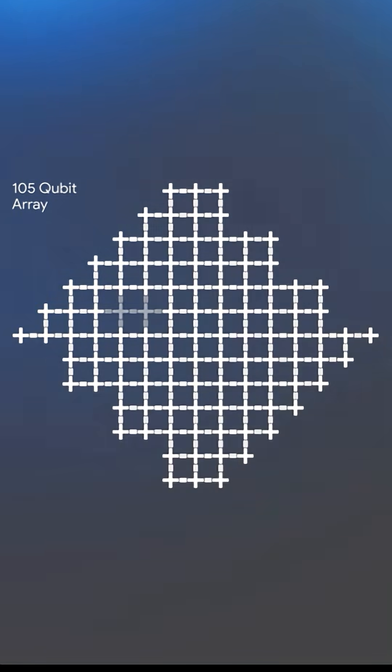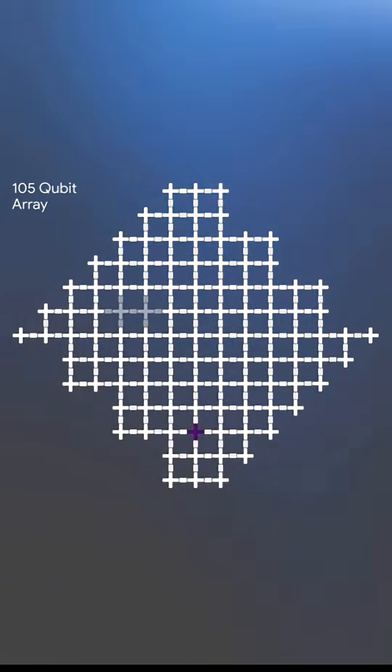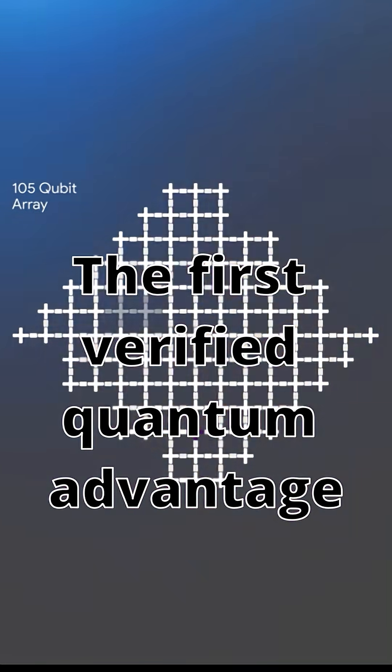Google recently introduced a new algorithm called Quantum Echoes. Using their quantum chip, they measured OTOC directly, watching how quantum chaos forms and spreads in real time — something even the fastest supercomputers can't simulate anymore.